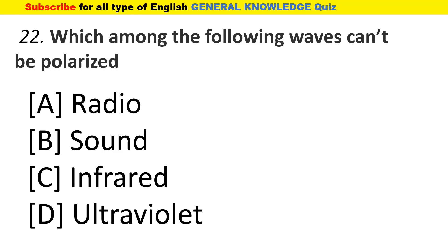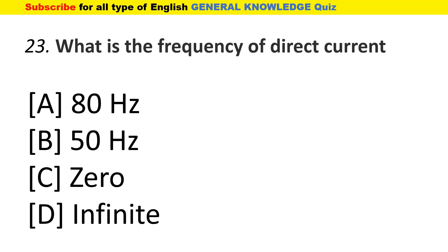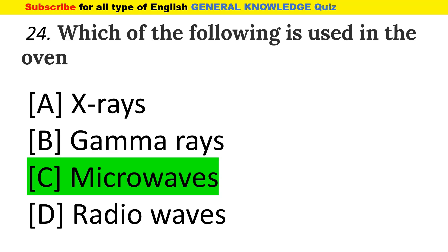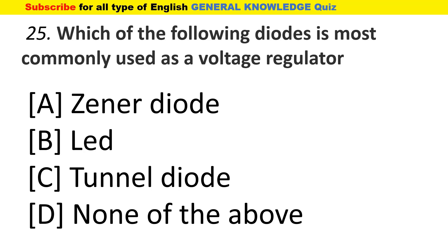The answer is sound. What is the frequency of direct current? The answer is zero. Which of the following is used in the oven? The answer is microwaves. Which of the following diodes is most commonly used as a voltage regulator? The answer is Zener diode.